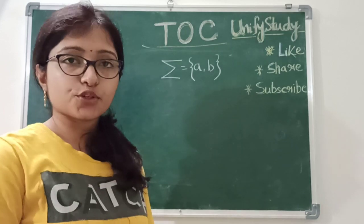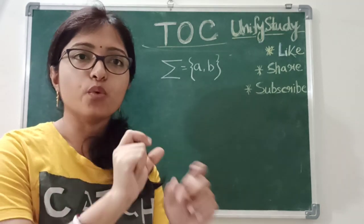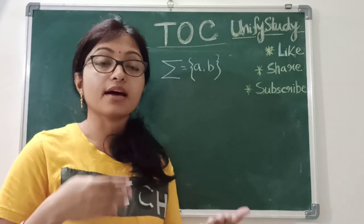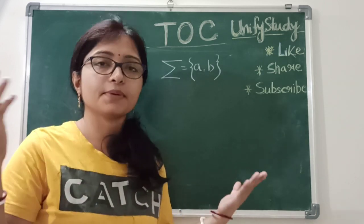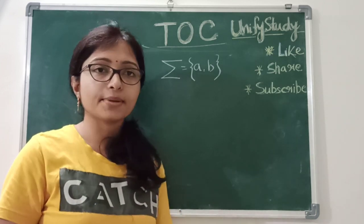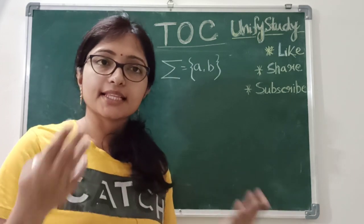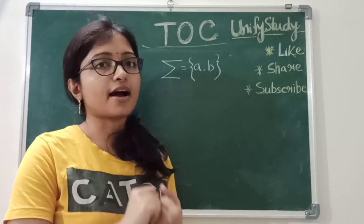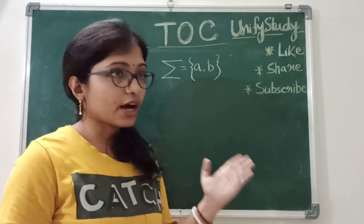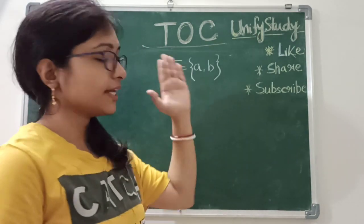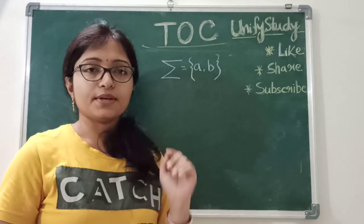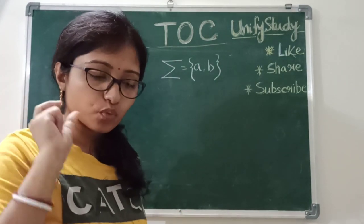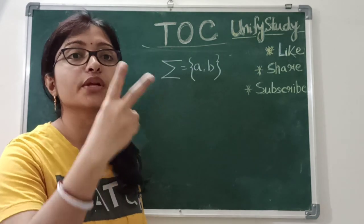Now with A to Z you can make some words — by combination of those letters we make words like Apple, Back. In that way we are making some words. There are some valid words and there are some invalid words. Now in TOC also, if I am telling you that with A and B you have to make some words but it is a two-letter word.